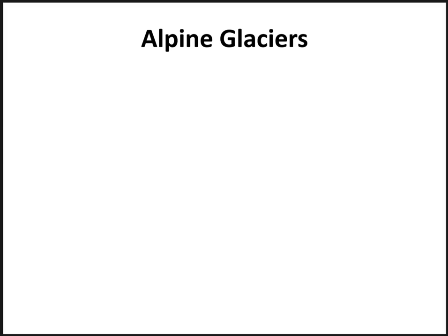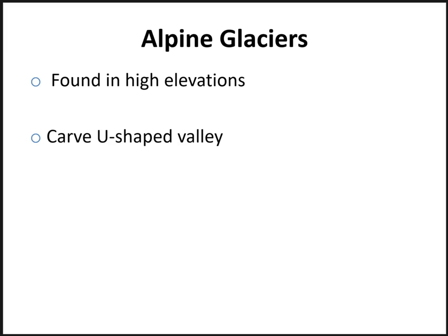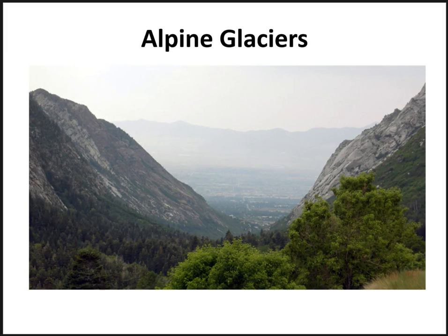There are several types of glaciers. The first type is called an alpine glacier. These are found in the upper elevations where snow accumulates year after year. These glaciers get so massive that they carve gigantic U-shaped valleys in the landscape, like here in this picture of Cottonwood Canyon in the Wasatch Mountains in Utah. This huge valley was carved by a glacier moving down.